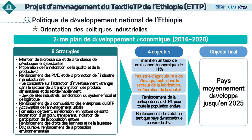Elle se trouve dans une situation dans laquelle la réalisation de l'objectif initial est un peu retardée en raison de la Covid-19 et de diverses situations politiques nationales. Parmi les neuf stratégies, l'une d'elles est de renforcer la promotion des PME et des industries manufacturières. Le pays se concentre sur l'accueil des entreprises à capitaux étrangers dans les secteurs du textile et habillement ainsi que la transformation des produits alimentaires, et le gouvernement prend l'initiative de développer des sites industriels et d'améliorer les systèmes douaniers et logistiques.